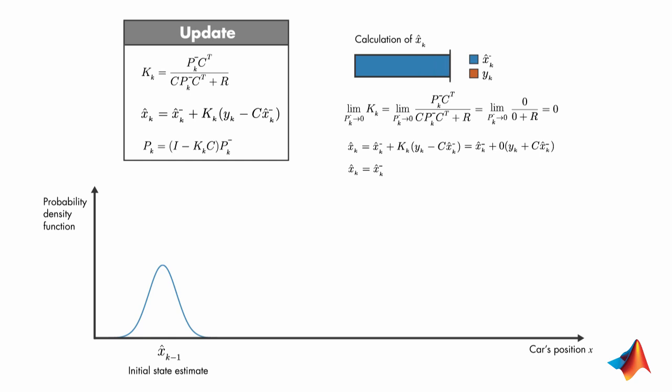On the plot, we'll show the a priori state estimate with an impulse function, which has 0 variance. And since the a posteriori estimate is equal to the a priori estimate, we'll show it with the same impulse function.